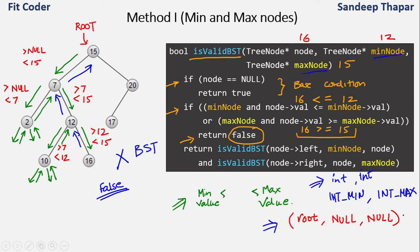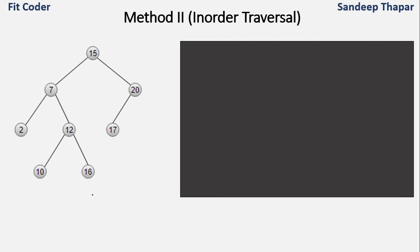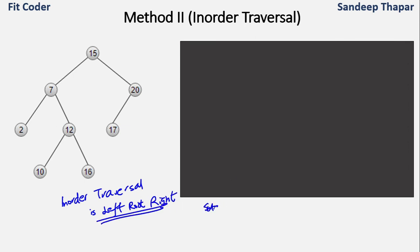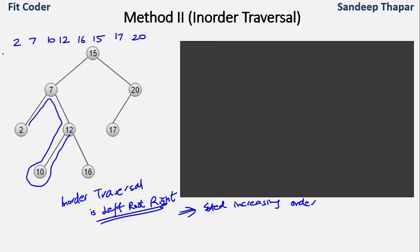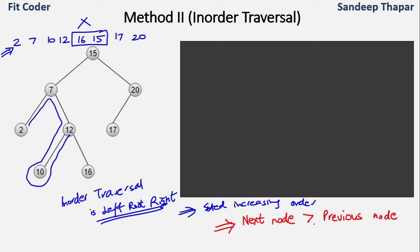Now let's look at the second method, which uses inorder traversal. Inorder traversal visits left, root, then right. For a BST, inorder traversal produces values in sorted increasing order. So this method makes use of the fact that if the tree is a BST, then the inorder traversal should be in strictly increasing order. For tree one, the inorder traversal shows that for nodes 16 and 15 the order is not increasing, so this tree is not a BST. We do an inorder traversal and check that each node is greater than the previous node.